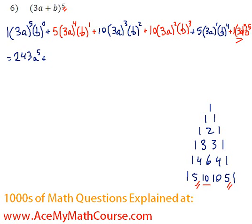Then we're going to add 5 times 3a to the 4 times b. Now 3 to the 4 is 81, a to the 4, b.